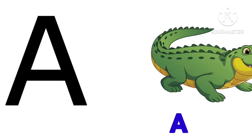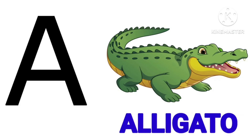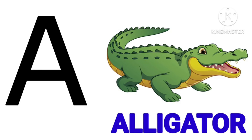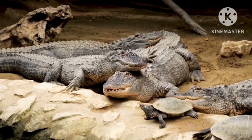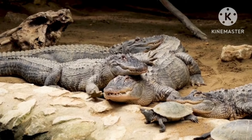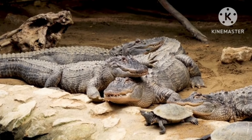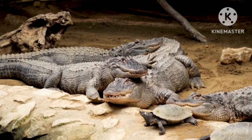This is alphabet A. A is for Alligator. Let's say it once again. This is an Alligator.